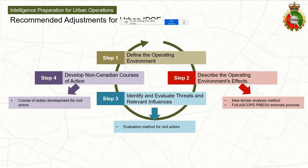In step two, I'm proposing a new method for terrain analysis, but also using the full ASCOPE-PMESII estimate process as it was originally designed by the US Marine Corps for their civil affairs. In step three, we're expanding it — not just evaluating the adversary or threat, but also evaluating relevant influences — so here we propose a new method of evaluation of civil actors. In step four, we're developing non-adversarial courses of action, looking not just at adversary COAs but the courses of action available for significant population groups within the environment.